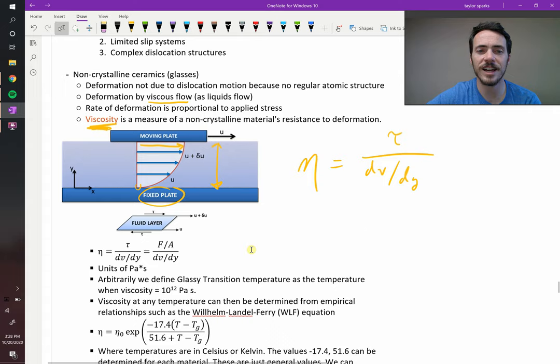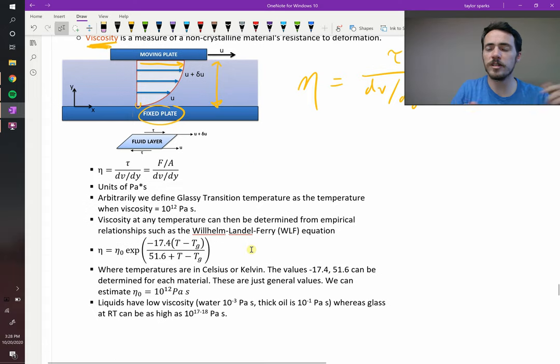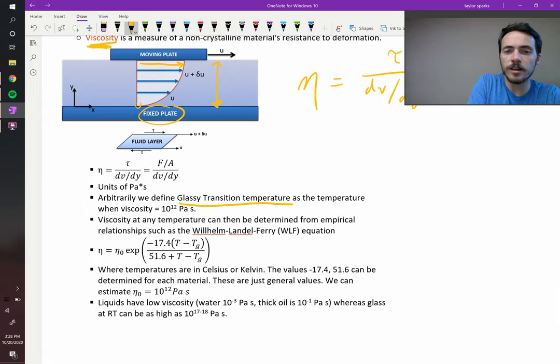So the units are Pascal seconds, and we've already said this before, but the glassy transition temperature is defined as the temperature when viscosity is equal to 10 to the 12th Pascal seconds.